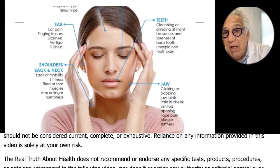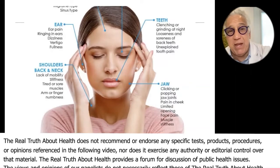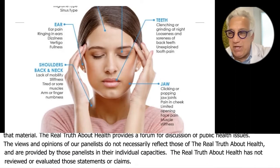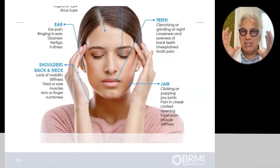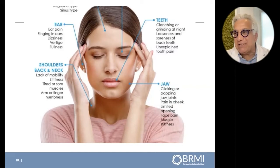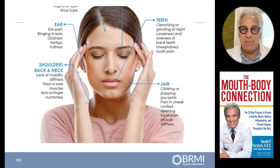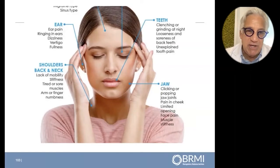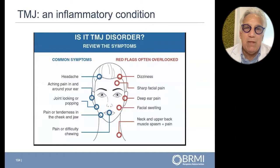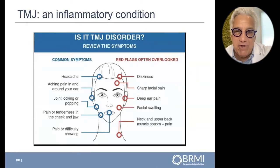Symptoms include ringing in the ear, jaw pain, back pain, and neck pain. An interesting note is that Lyme disease patients who have cavitations — Lyme spirochetes love the head and neck — often develop TMJ and stiff necks. Clicking or popping in the jaw joint is a sign of TMJ, as are shoulder, back, and neck pain, lack of mobility, and stiffness. This is an inflammatory condition.